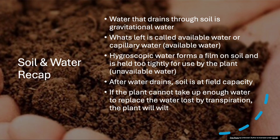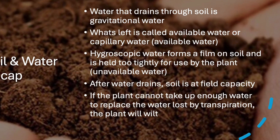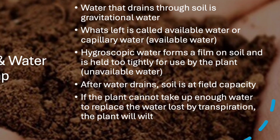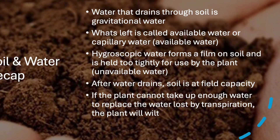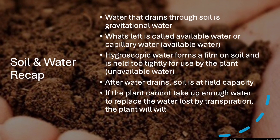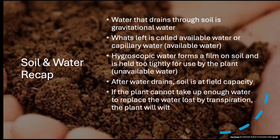Let's review a few key terms from the last chapter on Soil Science. Water drains through the soil as gravitational water. After that, what's left is either available water, which plants can take up, or hygroscopic water, which is held too tightly by the soil for plants to use. When soil is at its maximum water-holding capacity after draining, we call it field capacity.